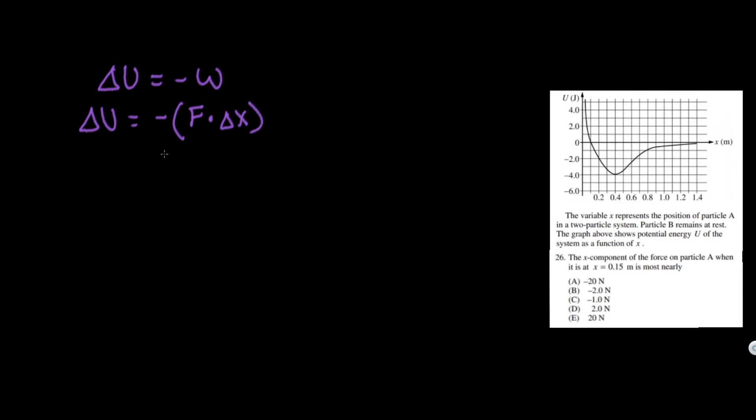Rearranging this formula, dividing by the delta X and then dividing by the negative one, we get F equals negative DU, or delta U, over DX. We're going to use this formula to help us analyze this problem. Usually whenever you see these potential energy curves, you're probably going to incorporate this equation into it.